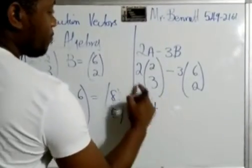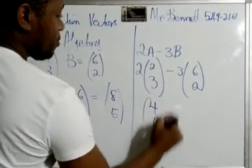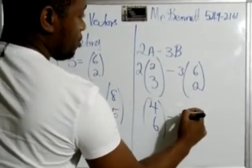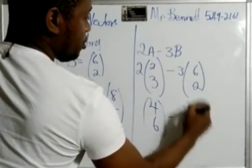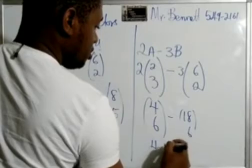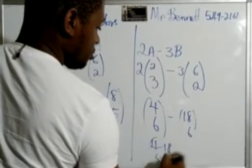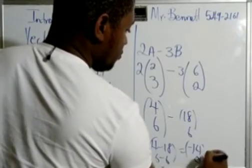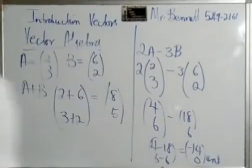All right, so let's go. We multiply by 2. So 2 times 2 is 4, 2 times 3 is 6. 3 times 6 is 18, 3 times 2 is 6. So it's 4 minus 18 and 6 minus 6. This will give us negative 14 and 0. And that will be your answer.